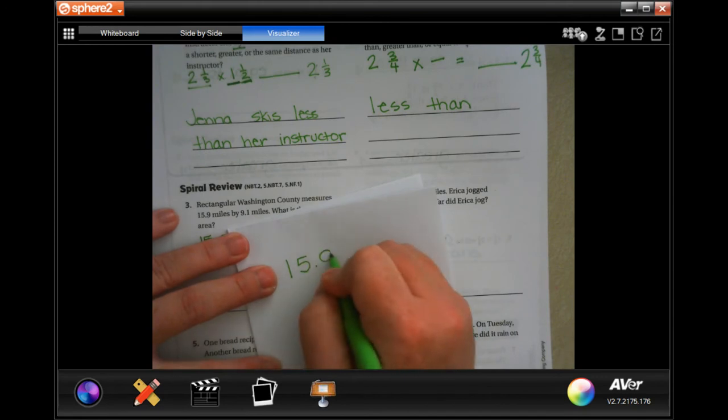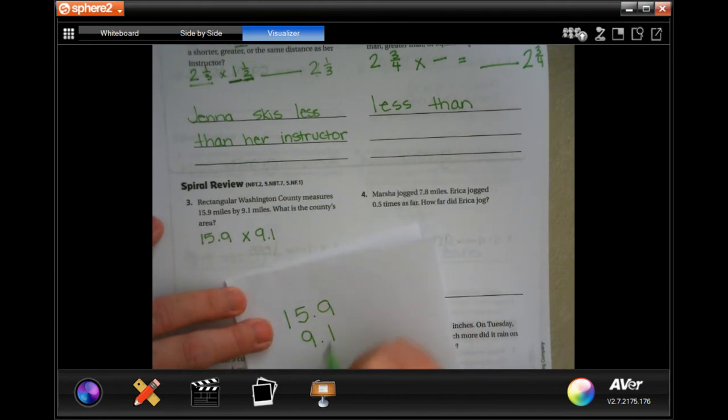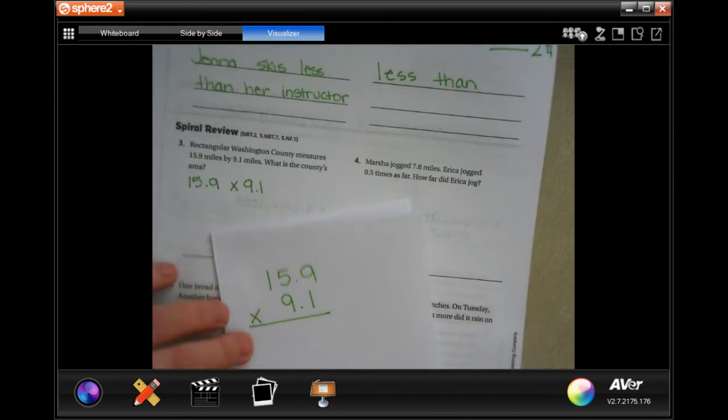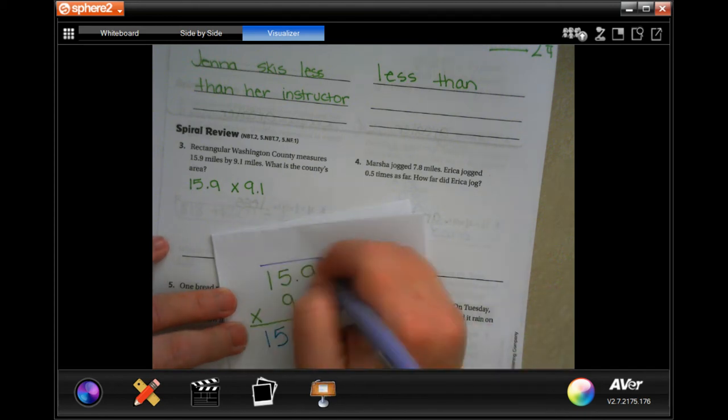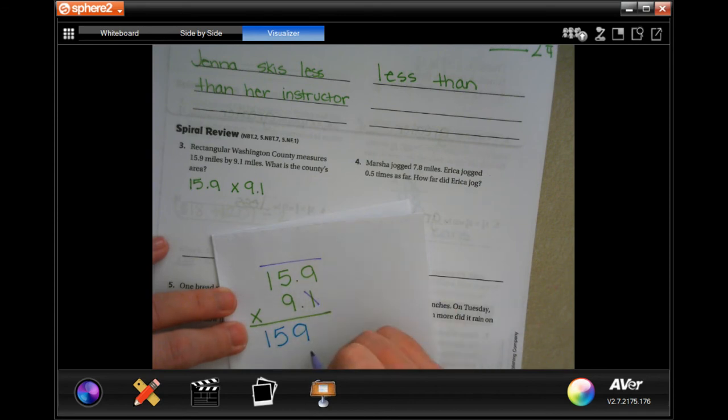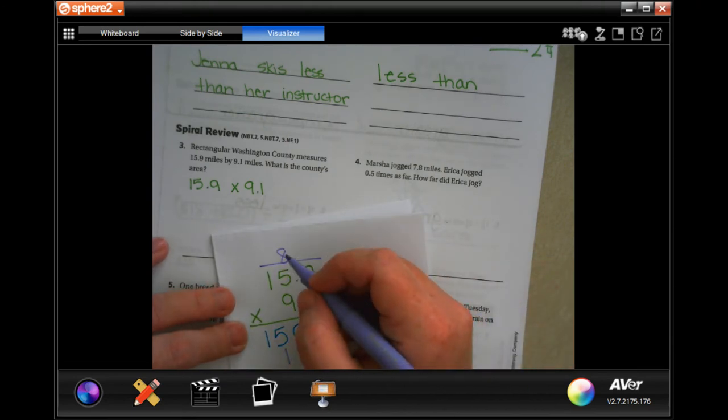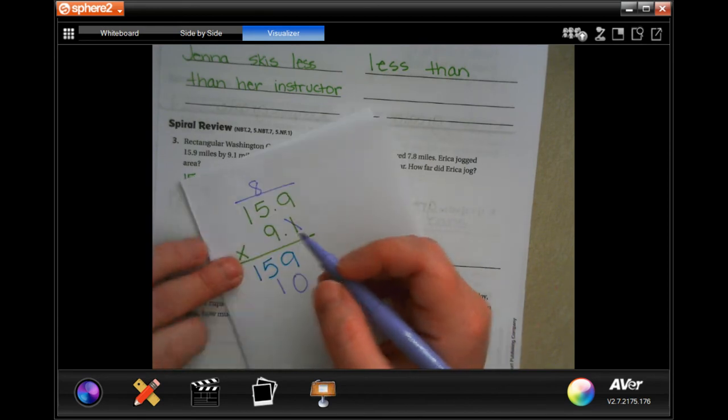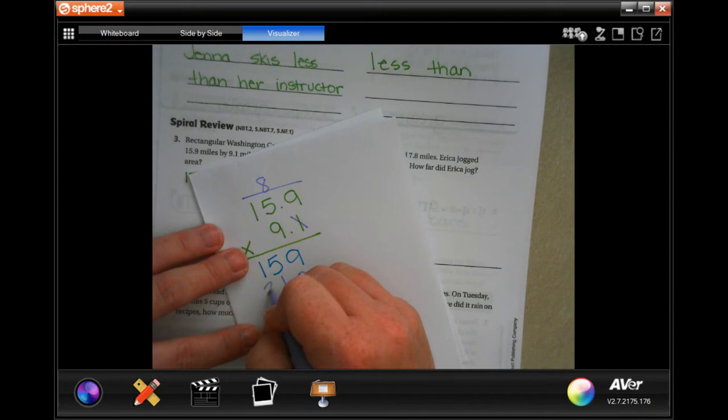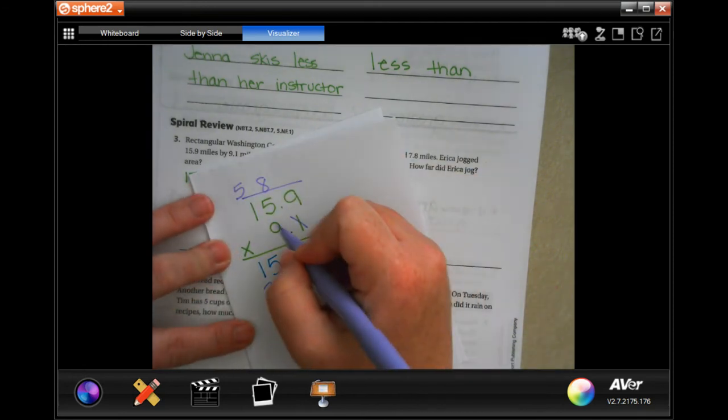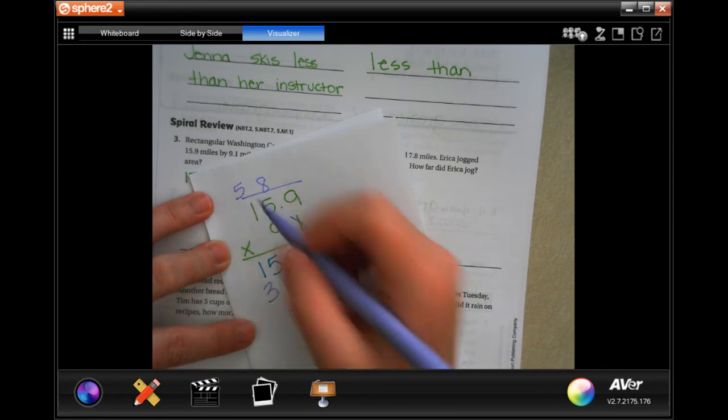15.9 by 9.1 multiply. 1 times 15.9, so I'm just going to... Tick, which we don't have any. That's okay. Toe. I'm sorry. Tick, tack, toe. 9 times 9 is 81. Carry the 8. 9 times 5 is 45 plus 8 more. Goodness. Okay, so 45 plus 8 is going to be 53. Carry our 5. 9 times 1 is 9 plus 5 is 14.